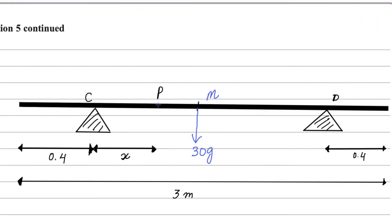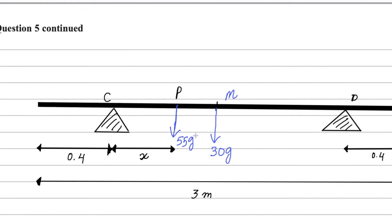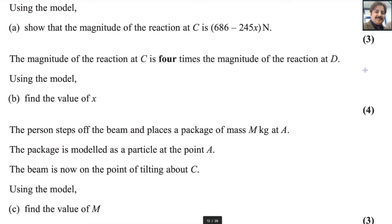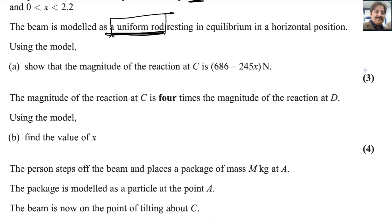The person is standing at point P, so the weight force for the person acts downwards and can be represented as 55g. The reaction forces always act upwards from the supports. At point C the reaction force acts upward, represented as Rc, and at point D the reaction force acts upward, represented as Rd. These are all the forces acting on the system. We want to find the value of Rc.